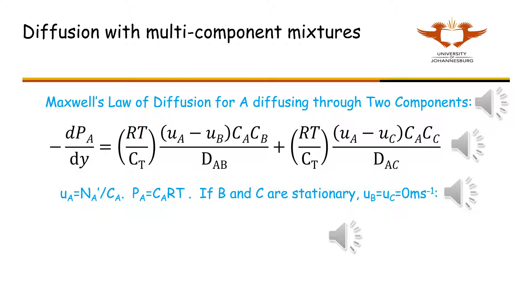The velocity of A is equal to the molar flux of A divided by the concentration of A. For an ideal gas, the partial pressure of A is equal to C A R T. You can have a situation where A diffuses through stationary B and C, and then the velocities of B and C are 0. Substituting these four equations into the equation above, you can solve for the molar flux of A.